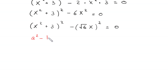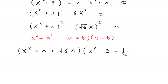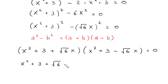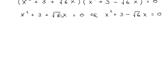We have a difference of two squares, so we apply the identity a squared minus b squared equals a plus b times a minus b. This gives us: x squared plus 3 plus root 6 times x, equals 0, and x squared plus 3 minus root 6 times x, equals 0. We now have two quadratic equations, from which we can find four solutions.